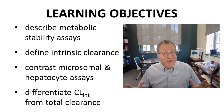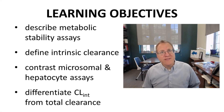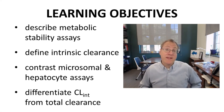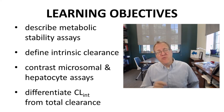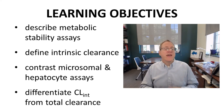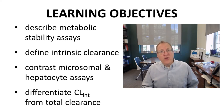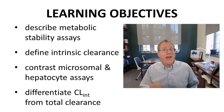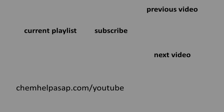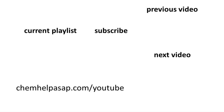We have now discussed metabolic stability assays in both microsomal and hepatocyte formats. We have defined intrinsic clearance and distinguished it as an in vitro measure from total clearance as an in vivo measure. I hope you now understand the difference between microsomal and hepatocyte stability assays and how both are relevant for understanding drug metabolism. Questions are always welcome. Take care.